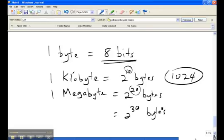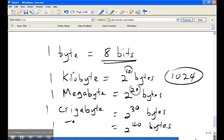What comes next? It's the gigabyte. And the one that comes after that would be 2 to the power of 40. And that would be the terabyte.